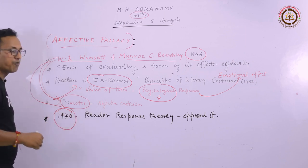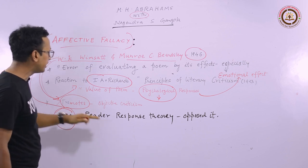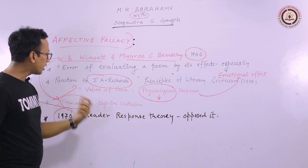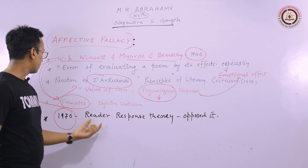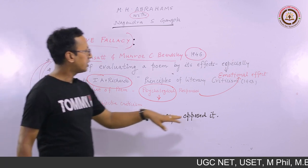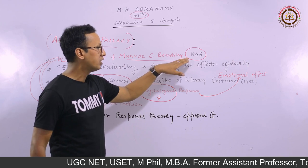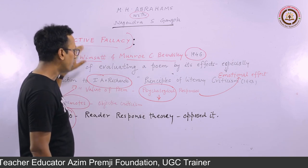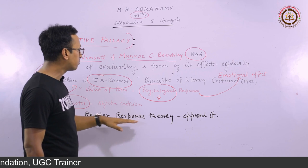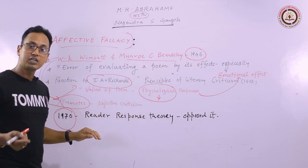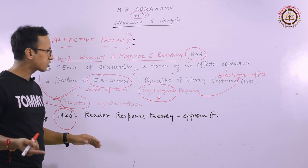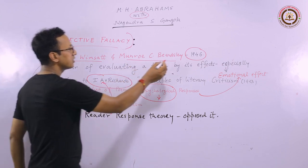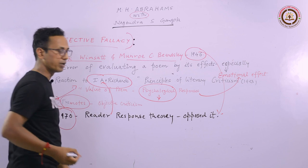An important postmodern theory is Reader Response Theory, which emerged in the 1970s. It says that the text under analysis is valued totally by the responses of the reader. Reader Response theorists opposed Beardsley's theory — they said they do not support the idea of objective criticism or affective fallacy, because they believe that the responses of readers are important when analyzing or valuing a text. In this way, Reader Response Theory is a kind of support to I.A. Richards and an opposition to Wimsatt and Beardsley.